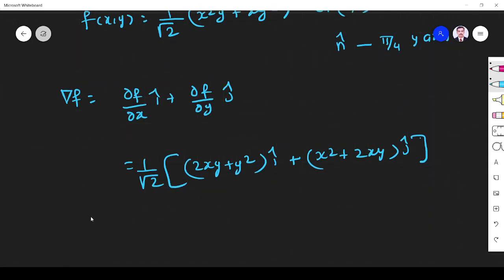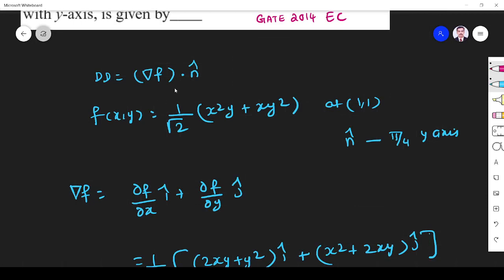Where do I have to find? I have to find the gradient at (1,1). So it is (1/√2). At x=1, y=1 it will be (1/√2)(3î + 3ĵ). So now we found the gradient, but what they ask is the directional derivative. So we have to find n̂.